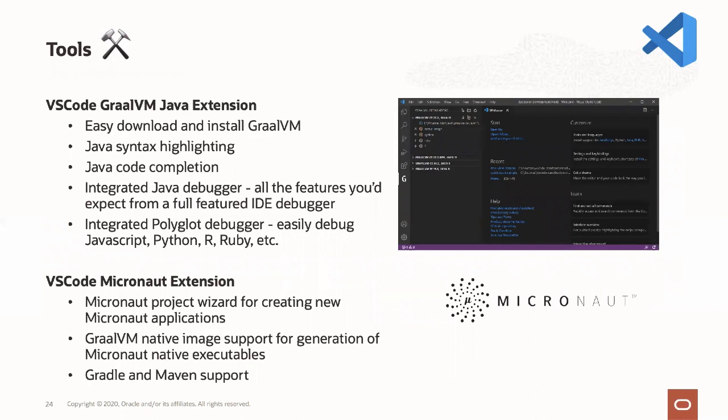The final area for 20.3 is tooling. Today, if you want to get GraalVM, you go to graalvm.org for the community edition or oracle.com/graalvm for the enterprise edition. We're improving the developer experience by adding support in Visual Studio Code for both downloading and installing GraalVM and utilizing it. We've also added support for Micronaut, incorporating the Micronaut Launch functionality directly into Visual Studio Code so you can get started with GraalVM and Micronaut without leaving the IDE.